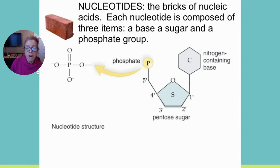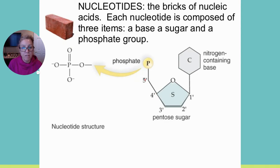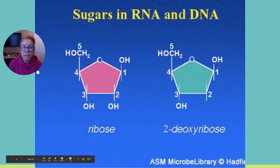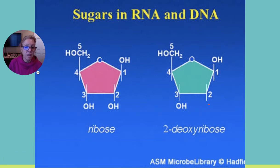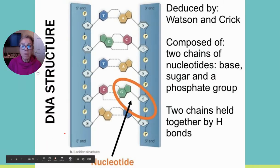The pentose sugar is a five-carbon sugar. Carbon one is always the carbon bound to the nitrogenous base. The carbons are numbered 1' through 5' — think of carbon 5 as a chimney on a house. Deoxyribose differs from ribose in that deoxyribose lacks an oxygen at the 2' carbon — it has just a hydrogen there. This distinction will become important later.